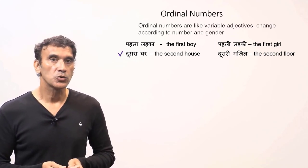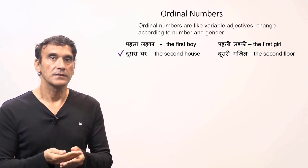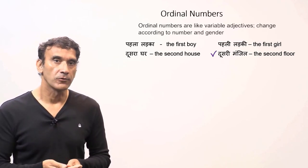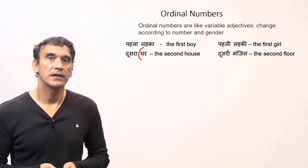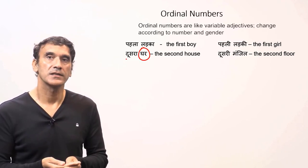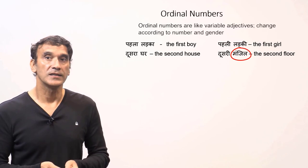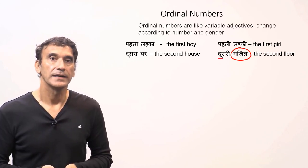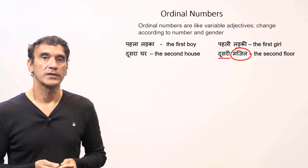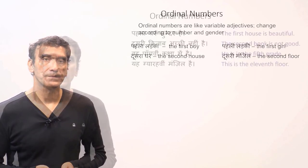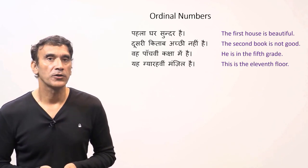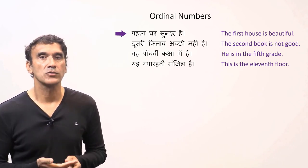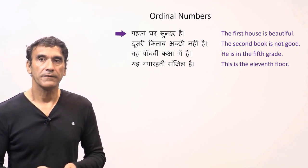Dusra ghar — second house; dusri manzil — second floor. Ghar (house) is masculine, so it is dusra, and the word manzil (floor) is feminine, so it is dusri. Here are a few sentences with ordinal numbers: pehla ghar sundar hai — the first house is beautiful.